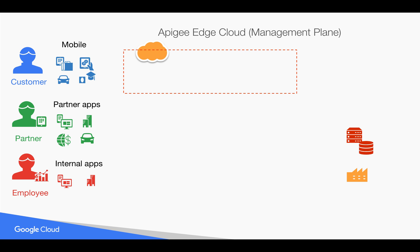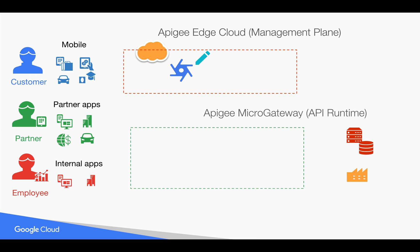For example, you have different back-end services running on your own systems and different consumption channels like customers, partners, or employees who need access to these services. In the hybrid gateway concept, you use Edge cloud only as a management plane where you create APIs, but you deploy those APIs into a micro gateway instead of the default message processor running on the cloud. The API is pushed from Edge cloud to the micro gateway, and all request-response processing happens inside the micro gateway.